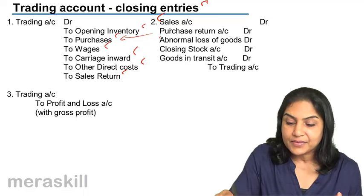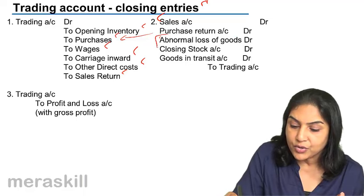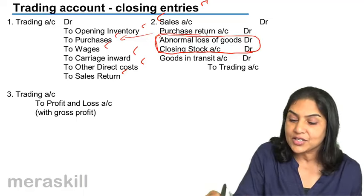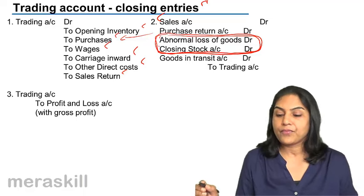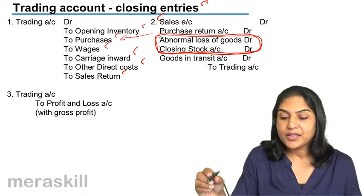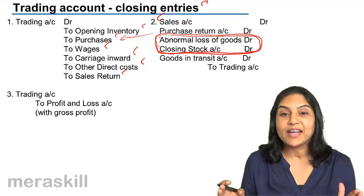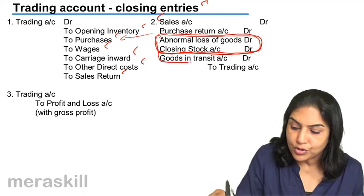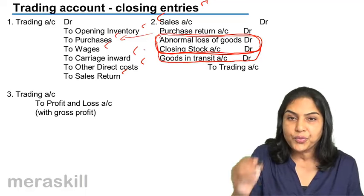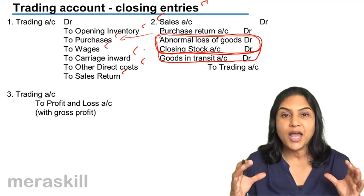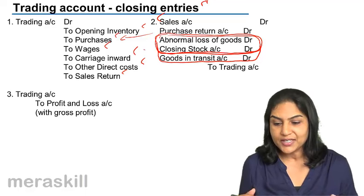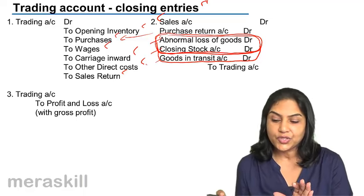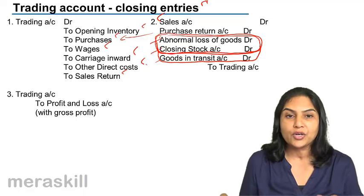Abnormal loss of goods — why is it included? This account and the closing stock account are two accounts which are created at this point in time, at the time of preparation of the trading account. They don't really appear in the trial balance. Goods in transit also — at the time of preparation of the trading account, we physically count the stock, we see how much was the abnormal loss of goods, and we check if there are any goods in transit. We then create these accounts, debit them, and credit them to the trading account.